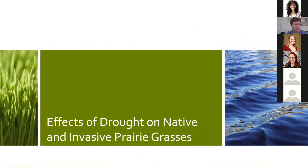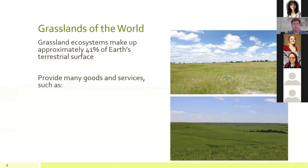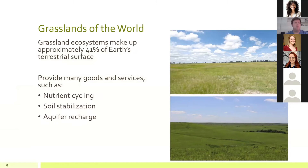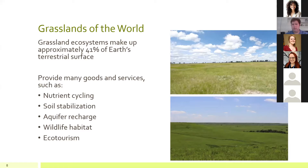This brings me to my first case study from my master's research at Oklahoma State University, where I looked at the effects of drought on native and invasive prairie grasses, comparing their performance. Grasslands make up about 40% of Earth's terrestrial surface and provide countless ecosystem goods and services — nutrient cycling, soil stabilization, aquifer recharge, wildlife habitat, and ecological ecotourism.